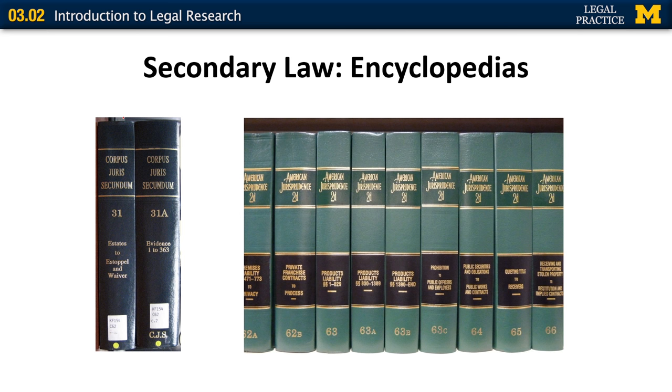One of the most common secondary sources are encyclopedias. Legal encyclopedias are a group of short articles on various legal issues arranged alphabetically, just like a regular encyclopedia. On screen are two of the most common general encyclopedias: the Corpus Juris Secundum, or CJS, and American Jurisprudence, or AMJUR. In addition to these general encyclopedias, there are state encyclopedias and encyclopedias on specific areas of the law, for example, on criminal law.